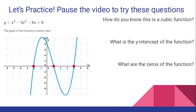Let's actually practice one. I'm going to have you pause the video and try these questions. We have an equation and a graph, and the questions are: how do you know this is a cubic function, what is the y-intercept, and what are the zeros? Hopefully your eyes went to the equation and to this exponent on the x, which is a 3. That's how you know it's a cubic function — the greatest exponent on the x is a 3.